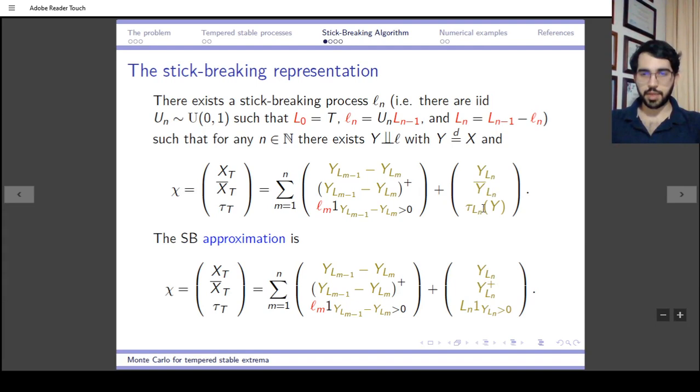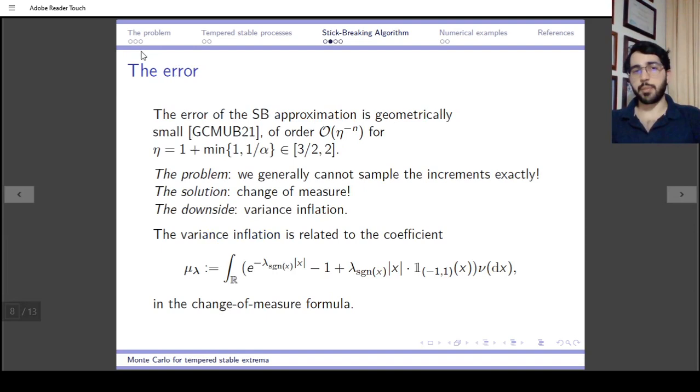The error will be reduced to the error in the final term, which will be geometrically small by virtue of the fact that L_N has average length T times 2^{-N}. Even the fluctuations of the Levy process there cannot be too large.